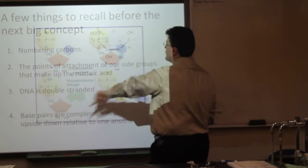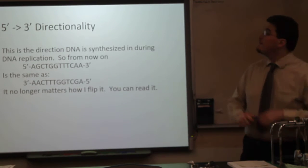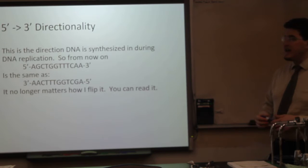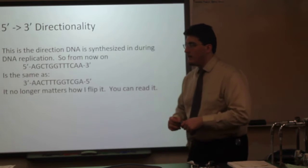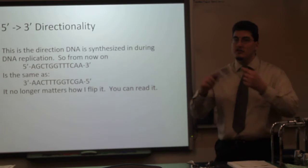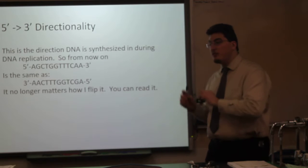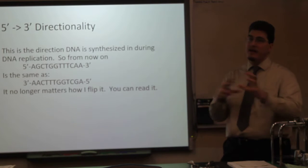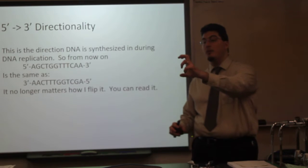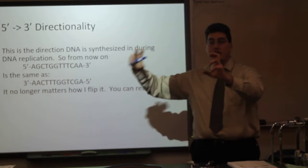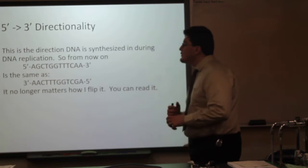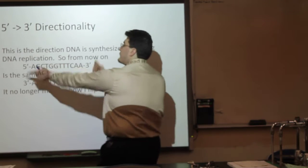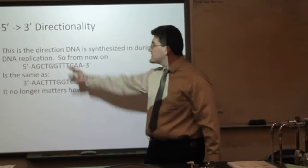That brings us to the concept of 5' to 3' directionality. There is a direction DNA is synthesized during DNA replication: 5' to 3'. DNA will always be synthesized from 5' to 3' — always. The base pairs will be laid down 5' to 3'. The 5' end will attach to the 3' end — always. The 3' end will be open and exposed, and the 5' end will come in and attach to it. If you have a 5' here and a 3' here, it doesn't matter if you flip it backwards — it is the same strand.